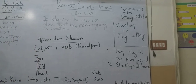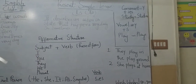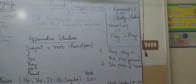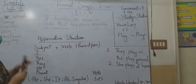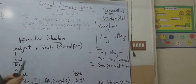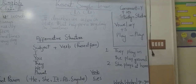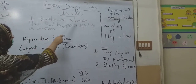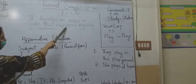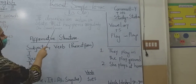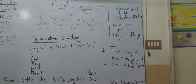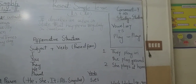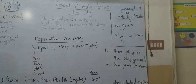Present simple tense refers to your routine activities — your actions which you normally do. Repeated actions or routines are called present simple tense. It describes an action or state that happens regularly or sometimes. Those activities which really happen regularly or sometimes are known as present simple tense.